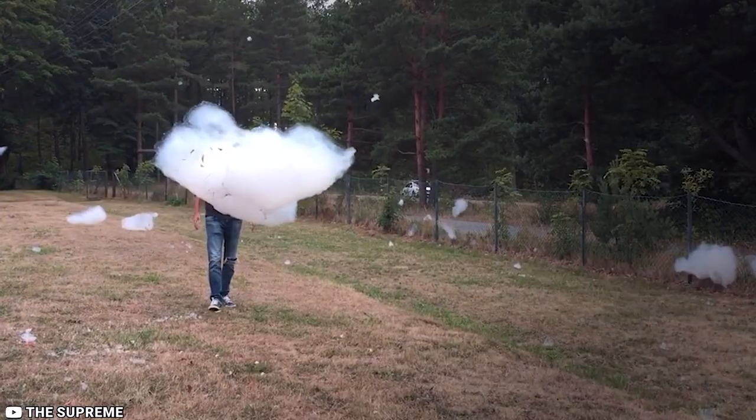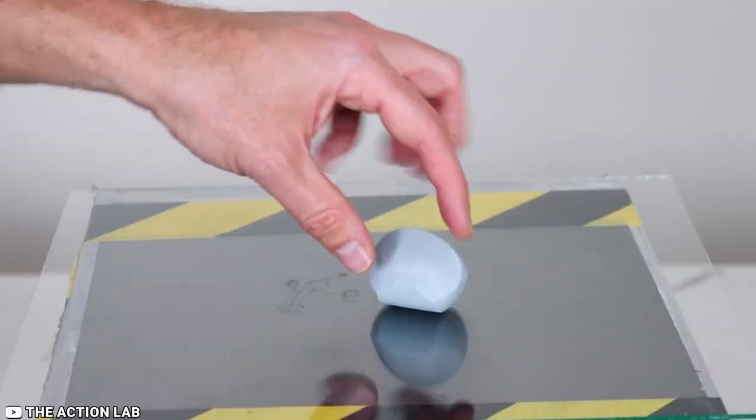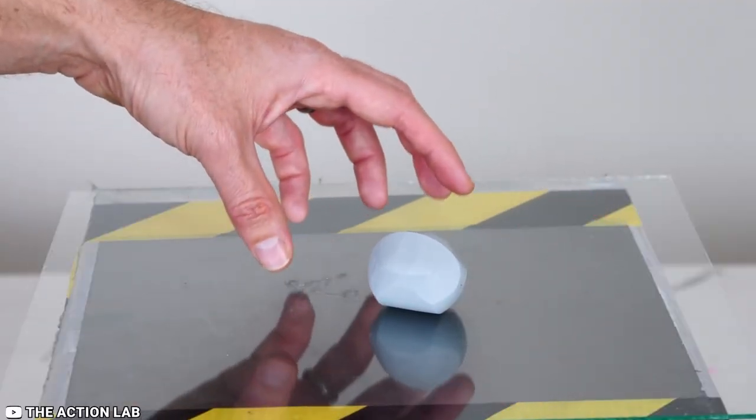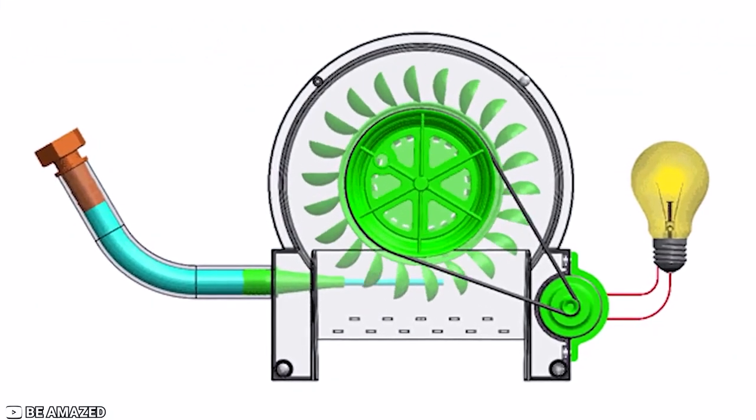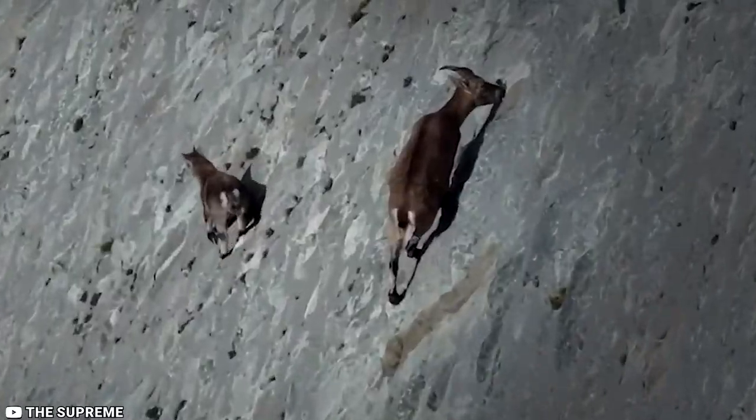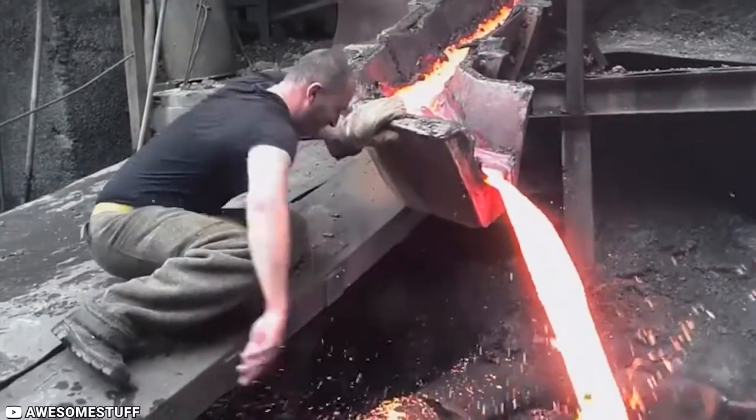According to scientists, physics is the real science. Everything in the world obeys the laws of physics. But in today's video, we are going to tell you about 15 crazy things that defy the laws of physics. So without any further delay, let's jump right into the video.